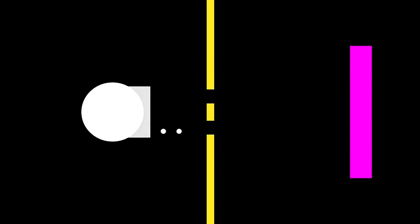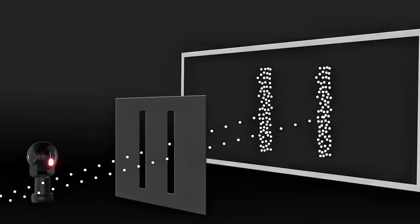Wave particle duality: Particles are strange. They can be both waves and solid bits. Sometimes they act like a wave, sometimes like a dot. It depends on how we look at them. Light, for example, can behave like both a wave and a particle.